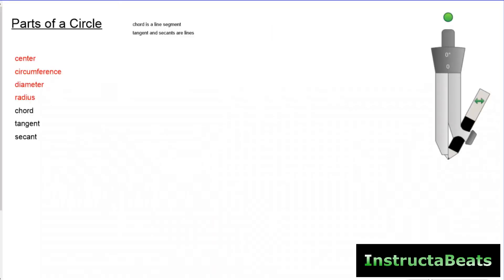Today all we're doing is labeling the parts of a circle. It's going to be a very easy lesson. The iExcel is very easy for you to practice. But we're going to be using these terms a lot, so I just wanted to introduce them so we can go slow now to go fast in a couple lessons.